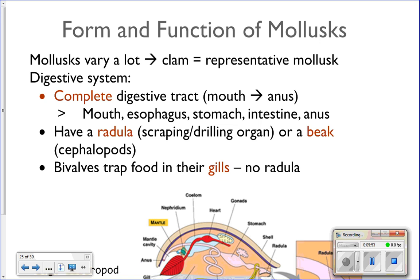Now let's look at form and function in molluscs — how they perform the seven essential functions all animals must do to stay alive. There's a wide variety of animals in Phylum Mollusca, so we're going to use clams as our representative mollusc. You'll be doing the clam coloring activity.